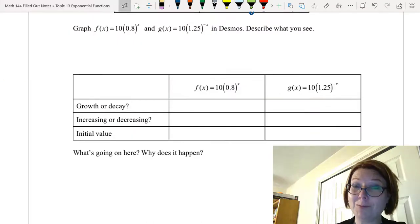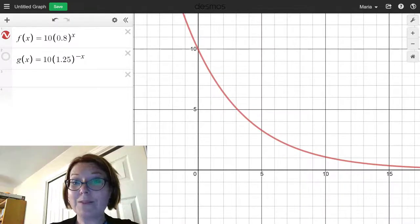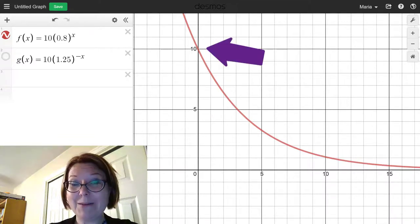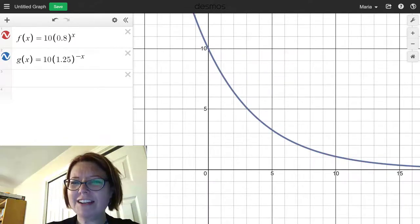All right our final problem. I'd like you to graph two functions in Desmos and then describe what you see. So the two functions are f of x equals 10 times 0.8 to the x power and g of x equals 10 times 1.25 to the negative x power. Let's go take a look. I'm starting with the graph of f of x. It's a decreasing function exponential decay with a y-intercept of 10. Let me include the graph of g of x now. And g of x is actually the exact same graph.